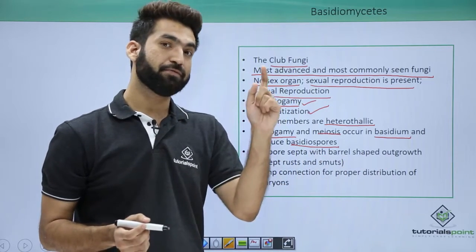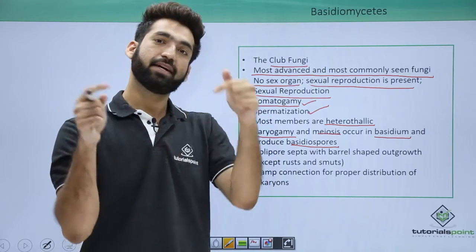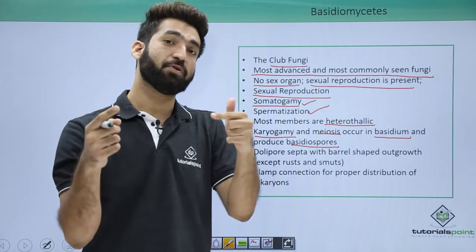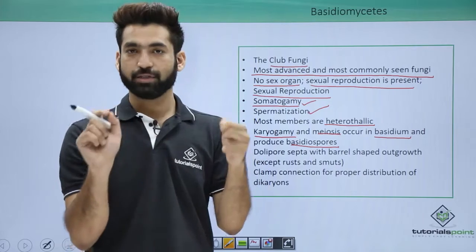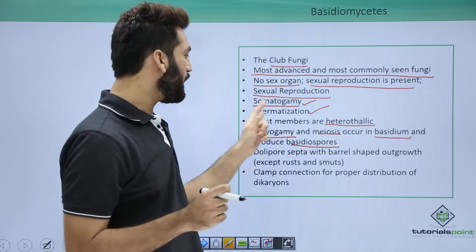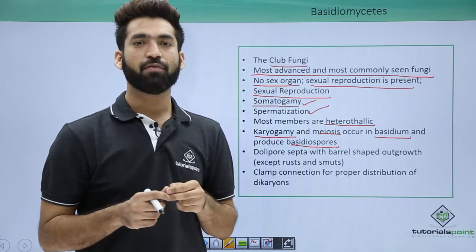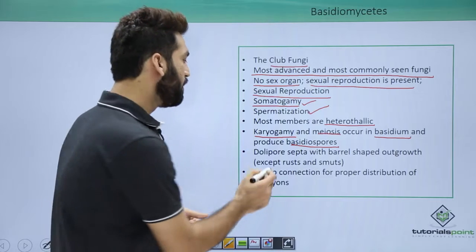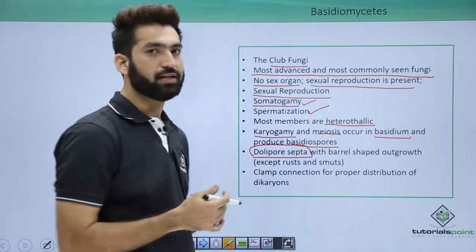Karyogamy and meiosis occur in the basidium, producing basidiospores. To compare: in Ascomycetes there was a fruiting body called the ascocarp, within which the ascus underwent karyogamy and meiosis to produce ascospores. Similarly, in Basidiomycetes there is a fruiting body called the basidiocarp, which contains the basidium where meiosis takes place and basidiospores are released.